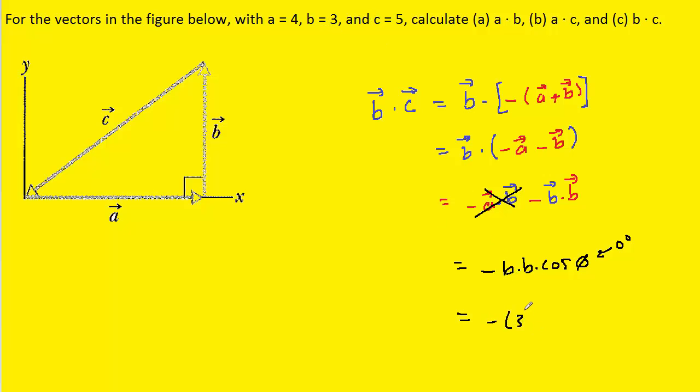And then 3 again, and then the cosine of zero degrees. And when we compute that, we get negative 9. And this is the correct answer to part C.